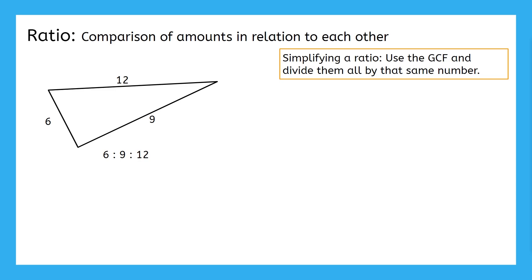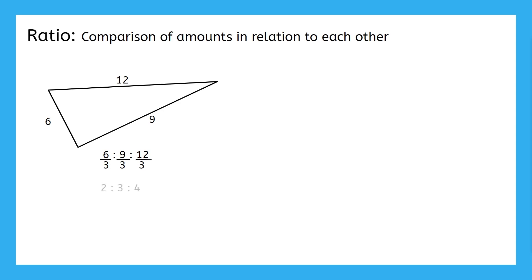What's the greatest common factor of 6, 9, and 12? Or in other words, what's the biggest whole number that we can divide all of these by and still get non-decimal answers? We can divide them all by 3, and when we do that, we still get whole numbers. 6 divided by 3 is 2, 9 divided by 3 is 3, and 12 divided by 3 is 4.